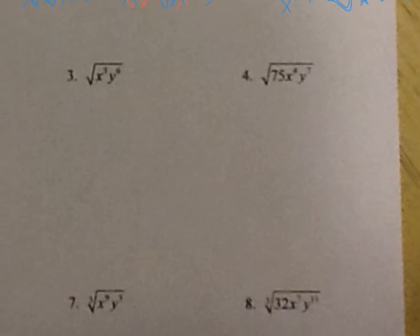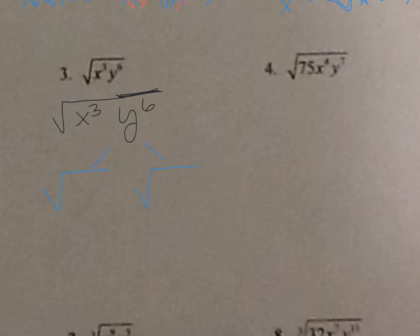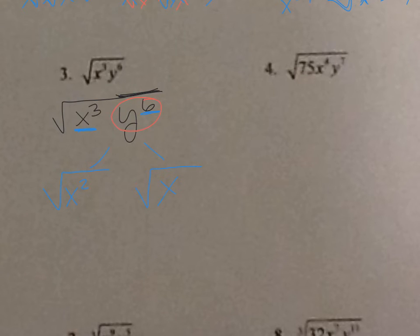Number three: the square root of x to the third times y to the sixth. I'm going to put perfect squares on the left and non-perfect squares on the right. For x to the third, the largest perfect square is x squared times x. For y to the sixth — that's an even exponent, so it's a perfect square and goes on the left side. The square root of x squared is x, the square root of y to the sixth is y to the third (half the exponent), and we bring down the square root of x.